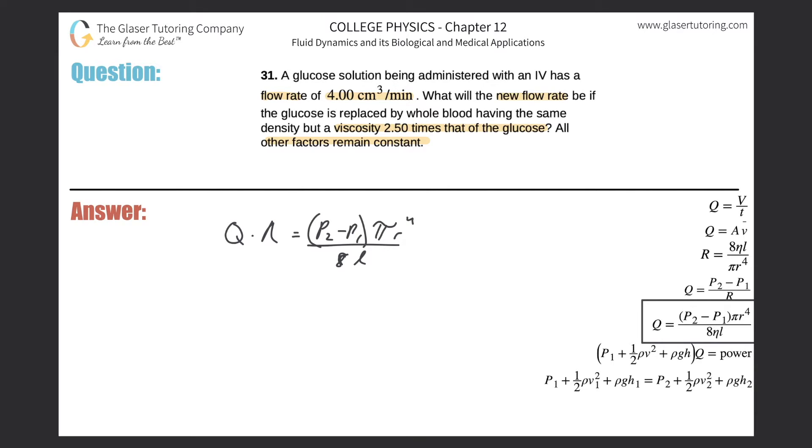Now what's important is that they're saying all of these other factors will remain constant. So if I create this formula for glucose, this is the flow rate of glucose, this is the viscosity of glucose. What I can now do is create a second equation.